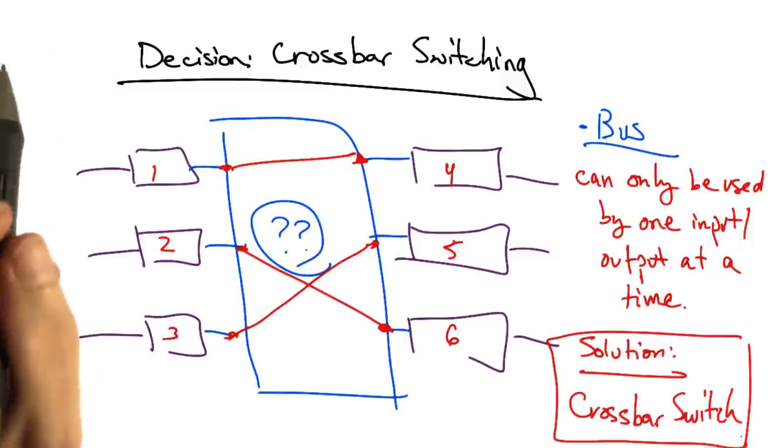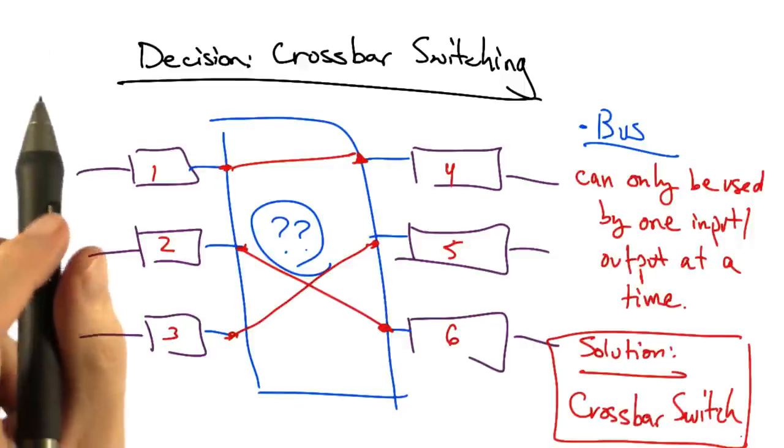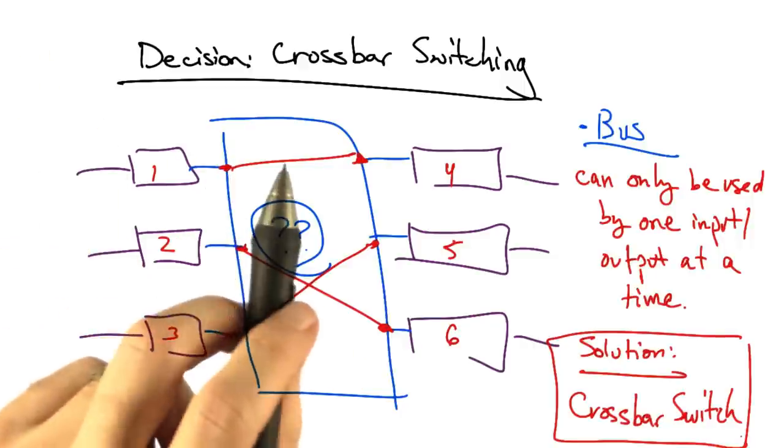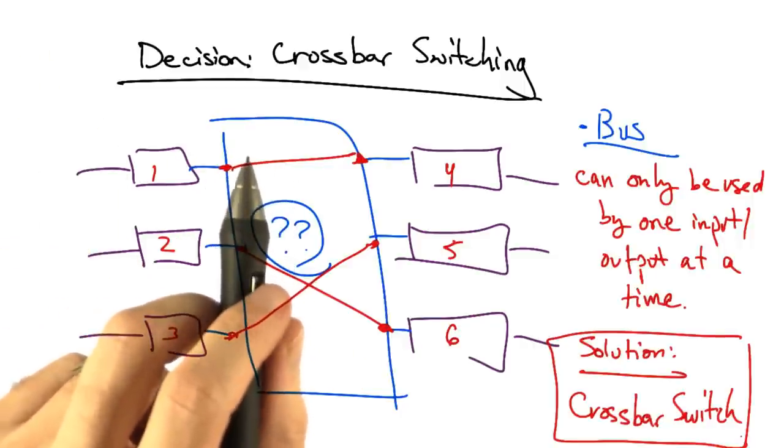The solution to this problem is to create what's called a crossbar switch, or sometimes is also called a switched backplane.